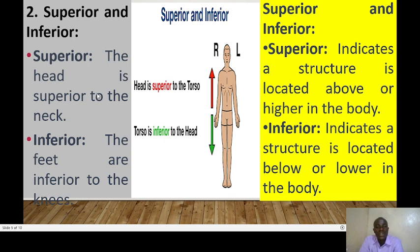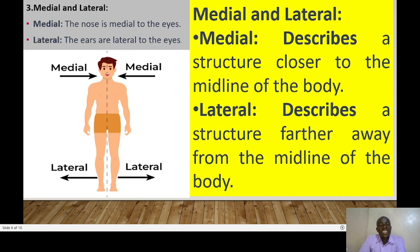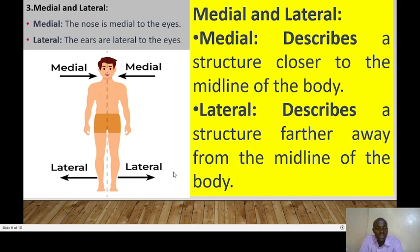We can also say the head is superior to the neck, or that the feet are inferior to the knees. Next, we look at medial and lateral. Medial describes a structure closer to the midline of the body — the midline is shown in our diagram — whereas lateral means a structure that is further away from the midline. For example, the nose is medial to the eyes, as it is closer to the midline. The ears are lateral to the eyes, being further away from the midline.